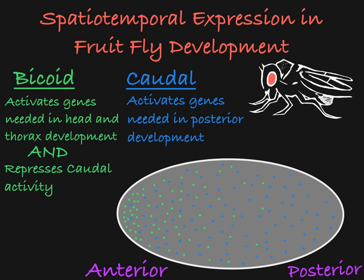It is important to only express genes involved in head development at the anterior end of the embryo, while keeping the expression of the genes necessary for posterior structures to the posterior end of the embryo. Without this differentiation of gene expression, you would not be able to create distinctly functioning sections of the organism.